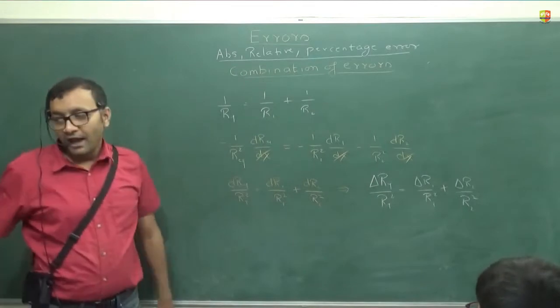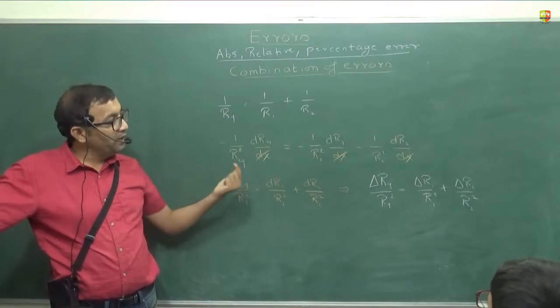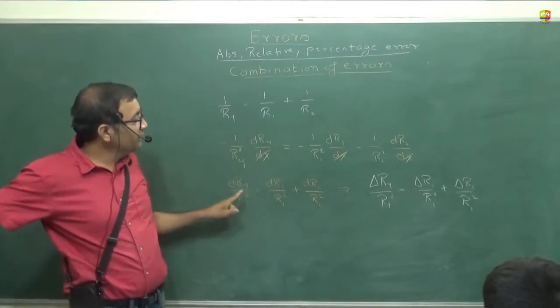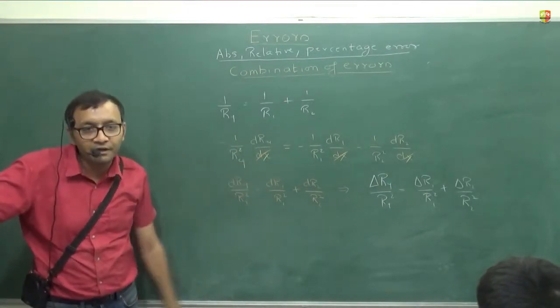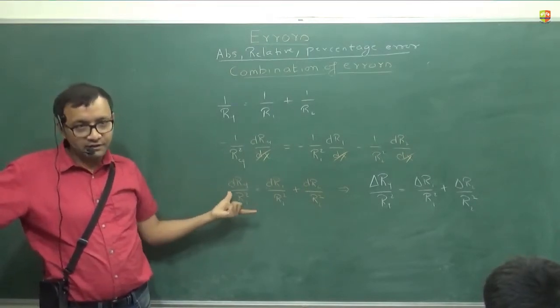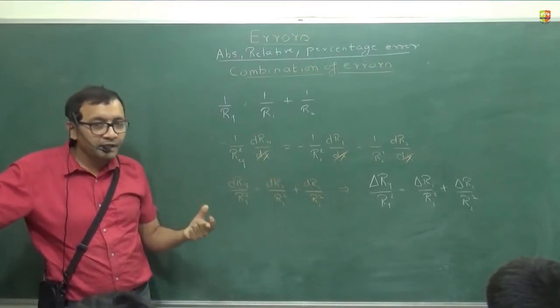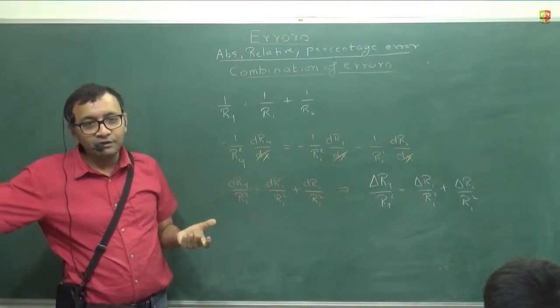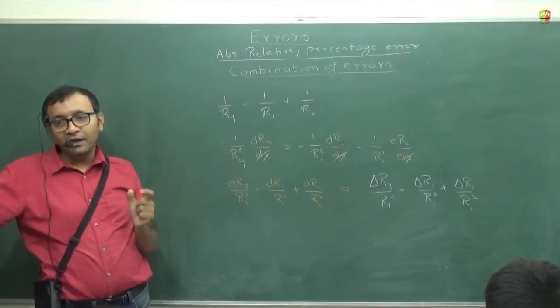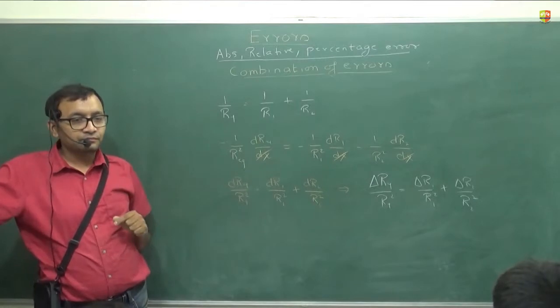If your error is very small, you can write dr as delta r. Then you can say that delta r equivalent by r equivalent square is equal to delta r1 by r1 square plus delta r2 by r2 square. In physics there will be lot of times that we have to come back to the same chapter after some time. Because these kind of things you will not understand if you don't know what is the derivative. So when you learn derivative, we will come back to this chapter a little bit.